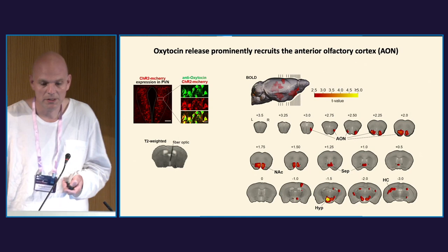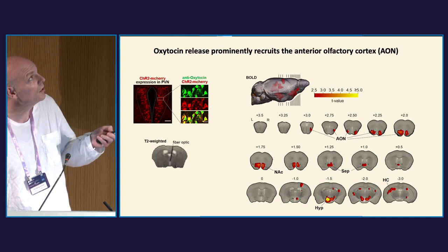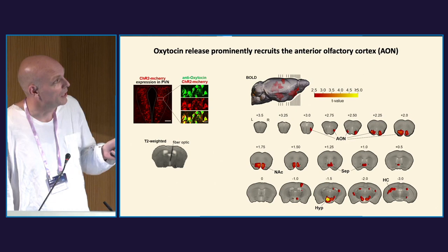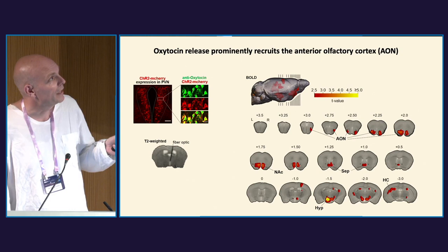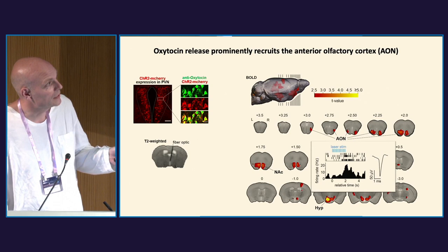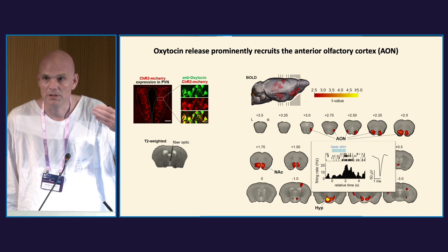One thing we first wondered is where this oxytocin release occurs. What we observed — using vague fMRI when we optogenetically evoked oxytocin release in the hypothalamus, specifically in the PVN — is a number of regions outside the hypothalamus where we actually stimulated. One of the regions with the highest fold activation was the anterior olfactory nucleus. We confirmed this with awake recordings using optogenetic stimulation again, and we indeed saw a positive modulation in activity that was significant.